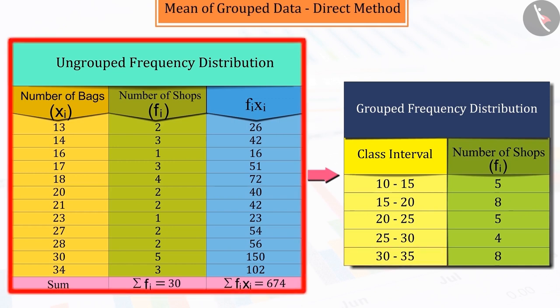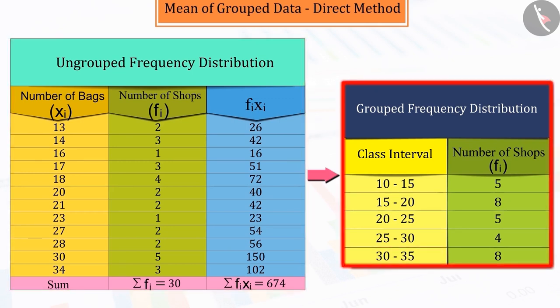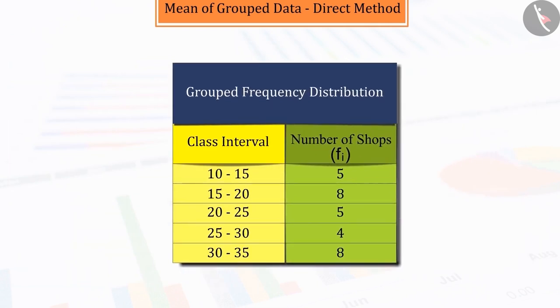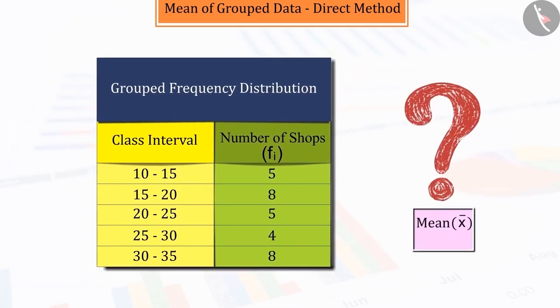But keep in mind, while allocating the frequencies of class intervals, the observation falling in the upper class limit of any class interval is taken in the next class interval. We can tell that in the class interval 10 to 15, there will be 5 shops. In 15 to 20, there will be 8 shops. And in the last interval of 30 to 35, there will be 8 shops. And on this basis, we construct a grouped frequency table.